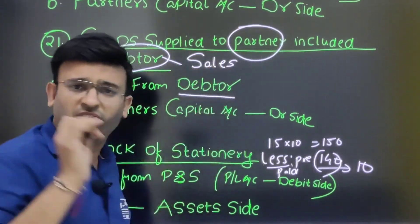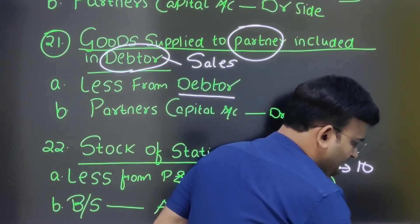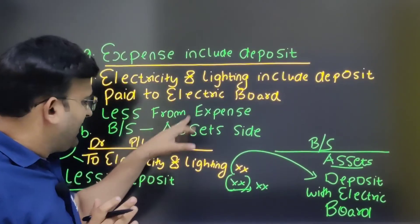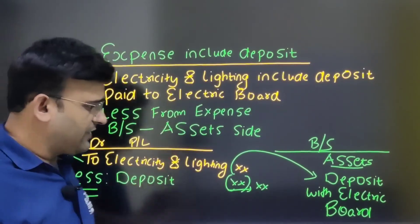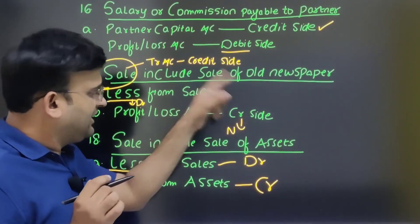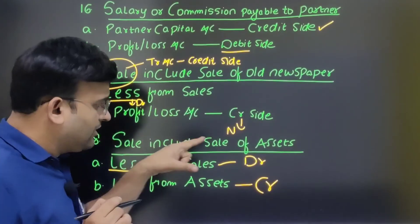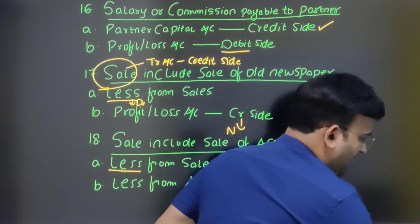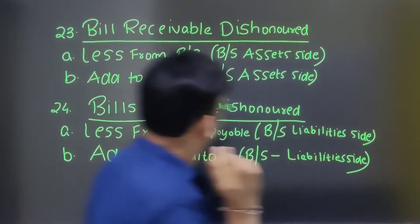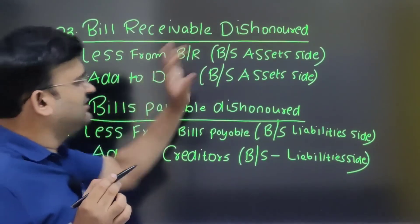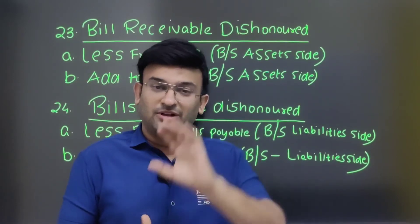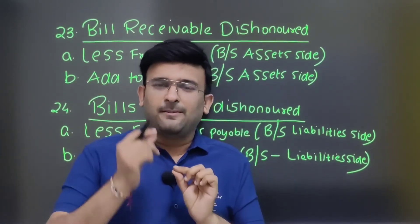Recap: expense includes deposit — less from expense, balance sheet asset side. Salary or commission payable to partner; sale includes sale of old newspaper; sale includes sale of asset — all covered. Now two more adjustments: bill receivable dishonor.